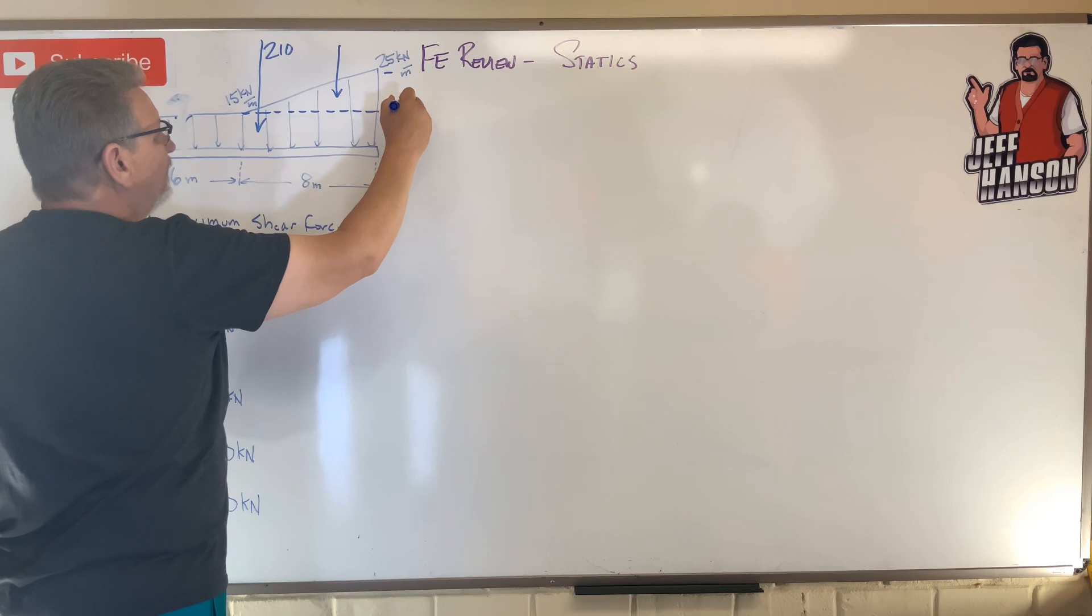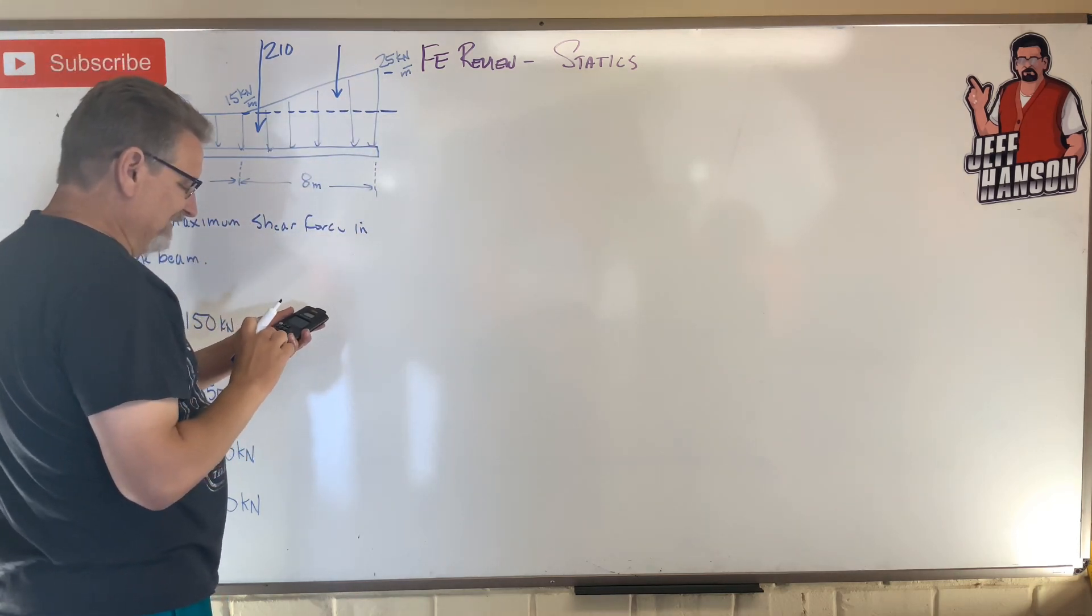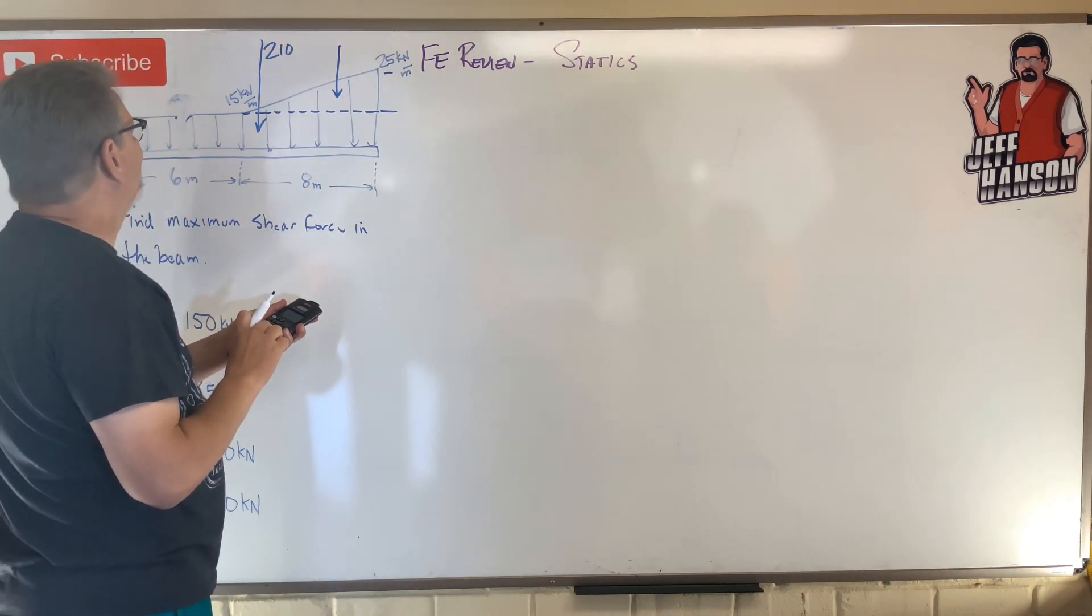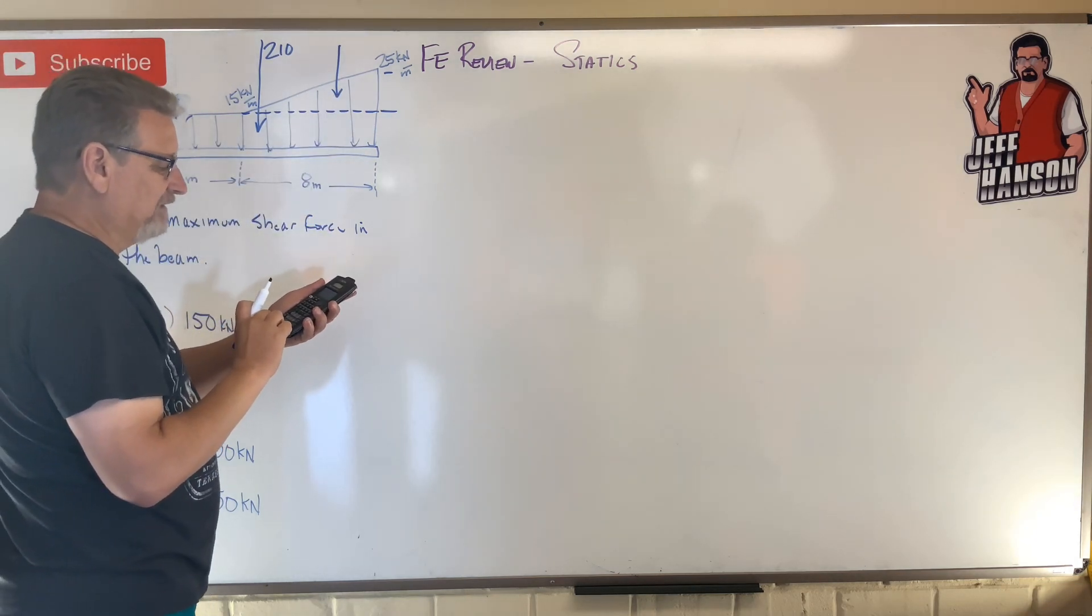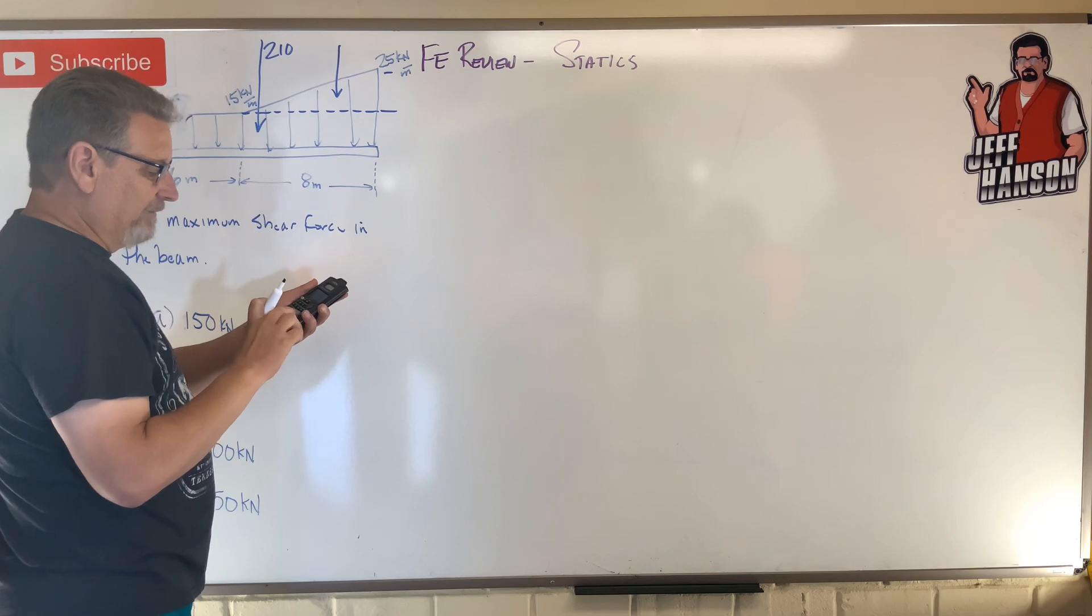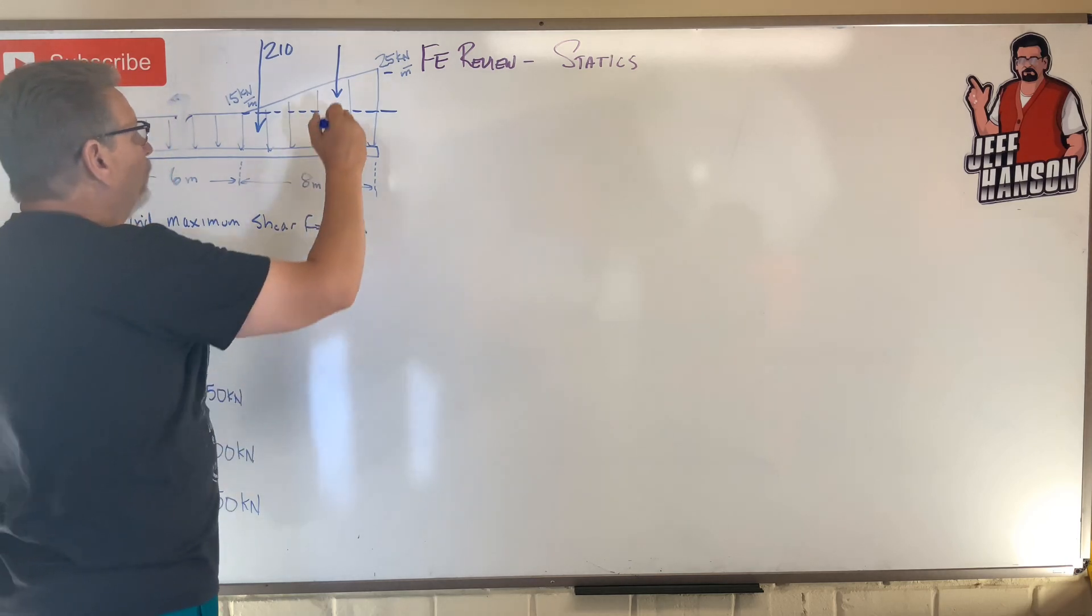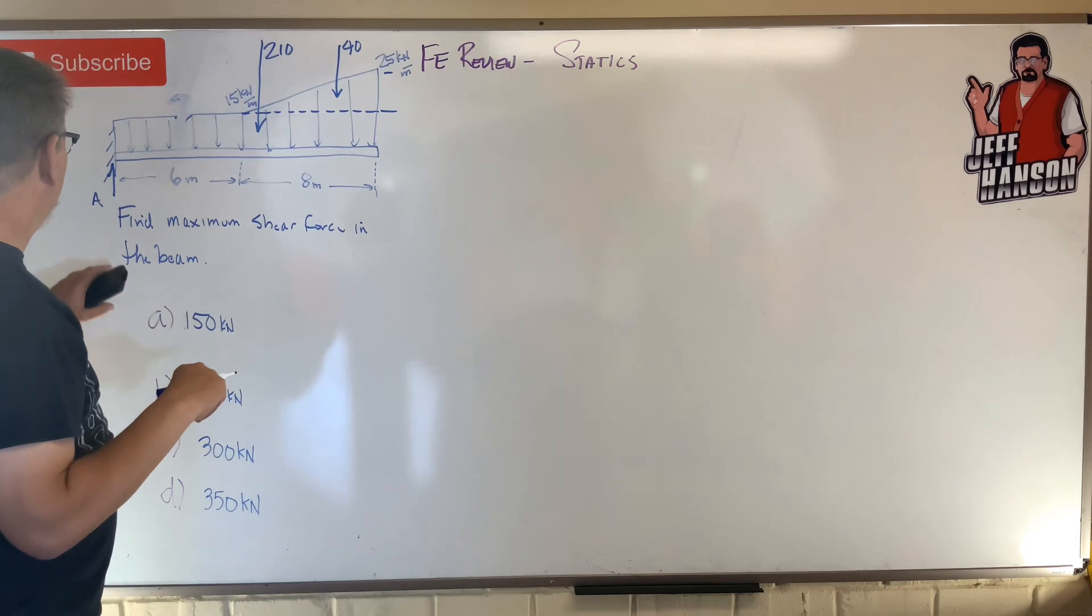And then that right there is one-half base times height. The base is eight, the height is—that's twenty-five, that's fifteen, must be ten—equals eighty. Divided by two, I just did that in my calculator, it's forty.